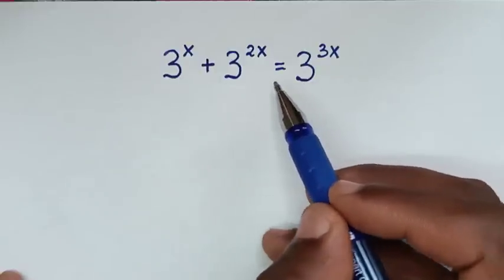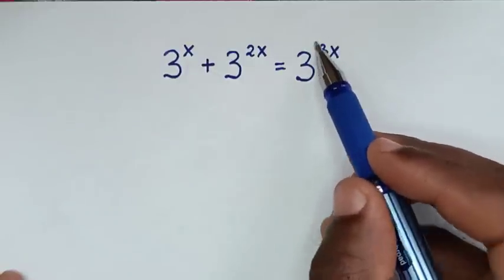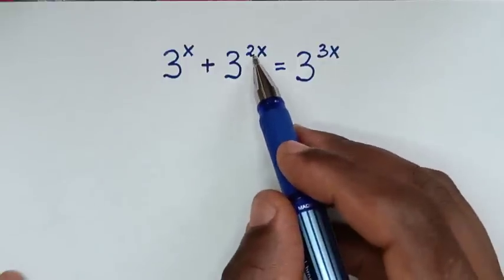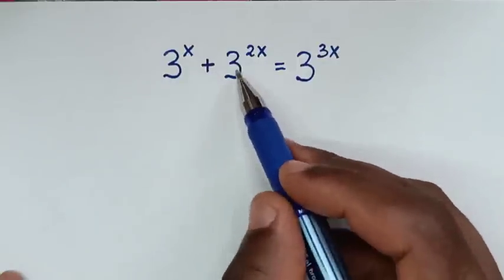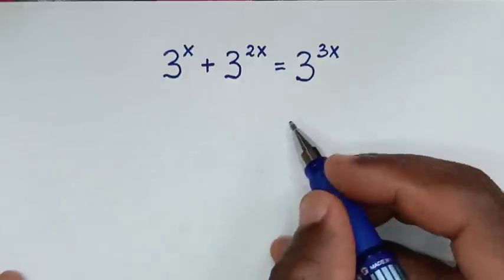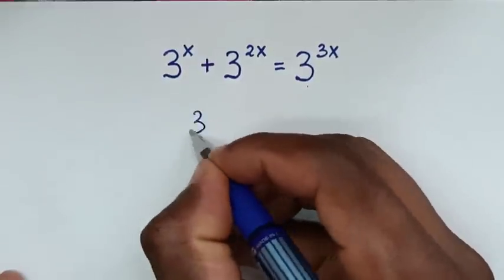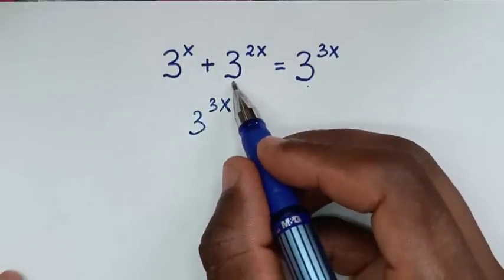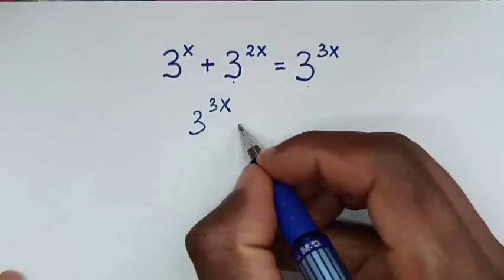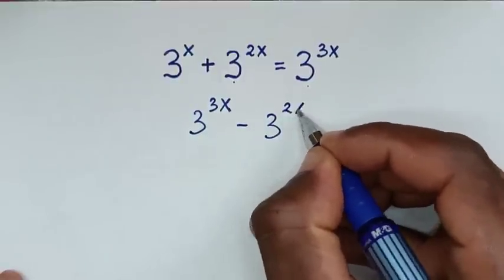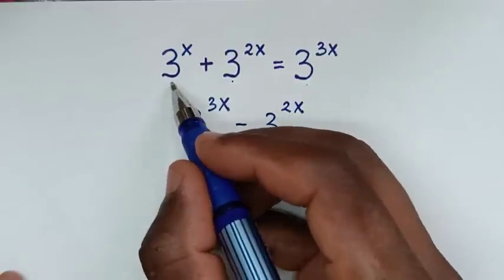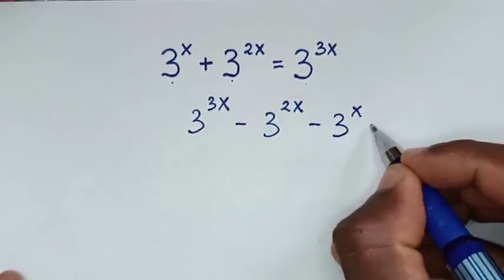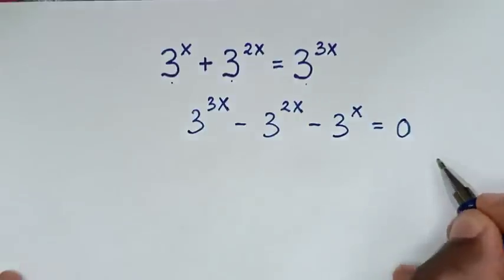This equation has the same base of 3. Since 3 power of 3x is the largest power, we take the smaller powers to the right side: 3 power of 3x minus 3 power of 2x minus 3 power of x is equal to 0.